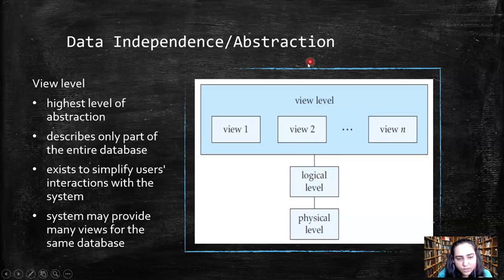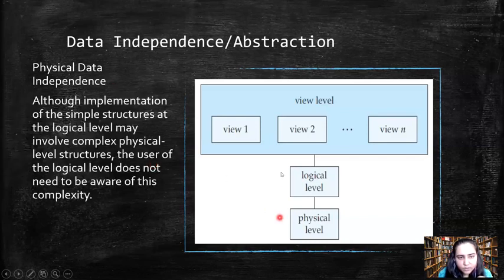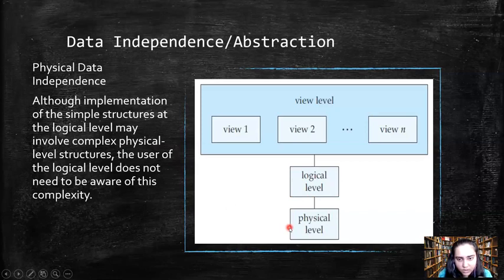Since we've studied what abstraction is, let's now look at independence, which is provided by abstraction. The first is physical data independence, which exists between the physical and the logical level. Although implementing the simple structures at the logical level may involve complex physical-level structures, the user of the logical level does not need to be aware of this complexity. If you're working on the logical level, you don't need to know how the physical level works, making it much easier to focus on logical design.